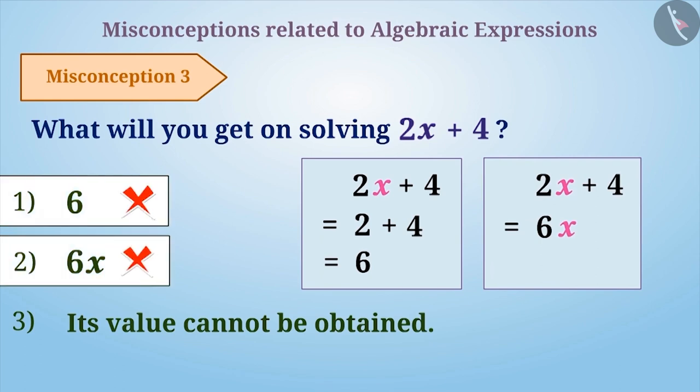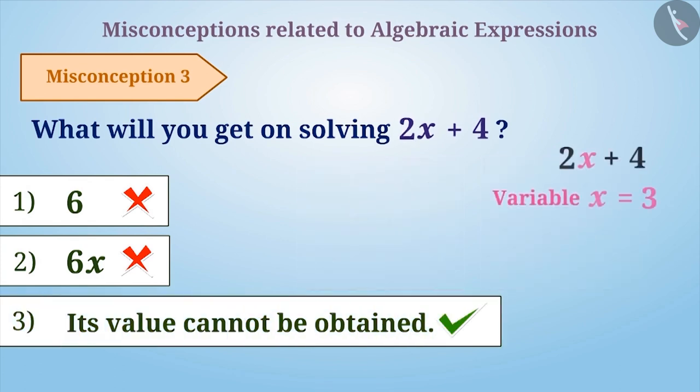The value of algebraic expressions like 2x plus 4 cannot be determined. Only if the value of the variable is given, then the value of these expressions can be obtained.